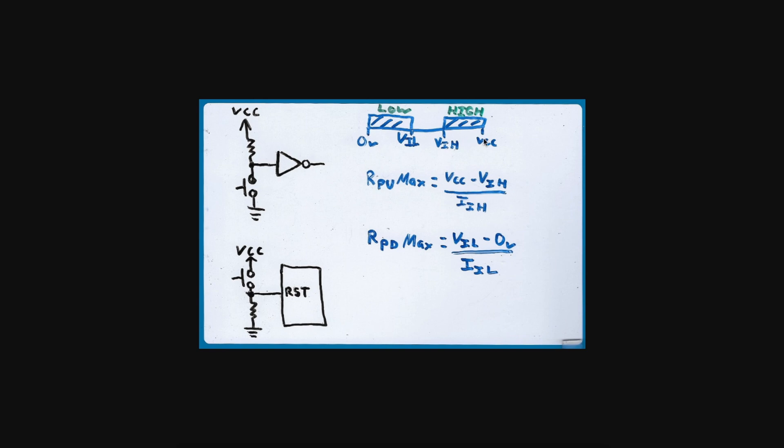So we look at this in the data sheet, and then we look at the worst case input current or input leakage current, which may be different between a logic high and a logic low on the input. So we look it up for each case, then we use Ohm's law to figure out the resistance value for a given worst case input pin current that will give us a valid logic high or logic low based on the voltage drop across the resistor in each case of pull-up and pull-down.